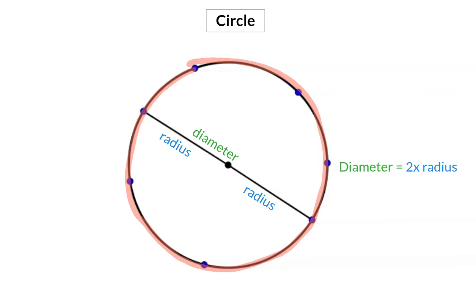For the perimeter of a circle we have a specific name, and that is the circumference. But because the circle does not have any straight lines anymore, we need a new formula to determine this circumference. Before we can have a look at this formula, you need to know what pi is.